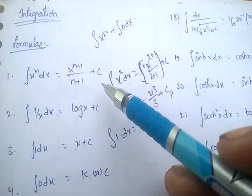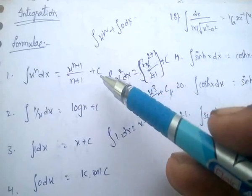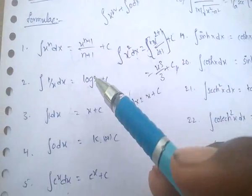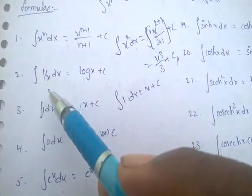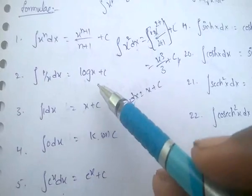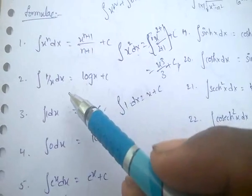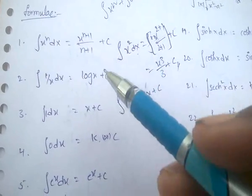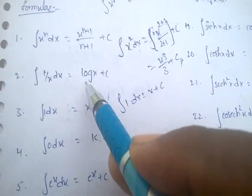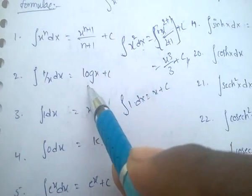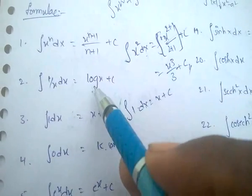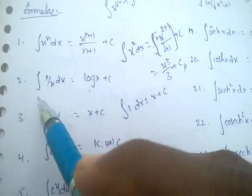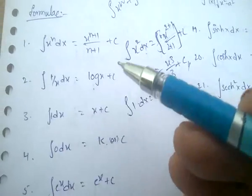C is a constant; it is added to every solution. Integral of (1/x) dx equals log x. It is the opposite of differentiation — that is, d/dx of log x equals 1/x. So integral of (1/x) dx equals log x.